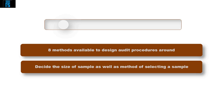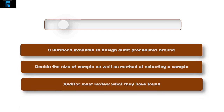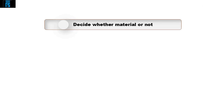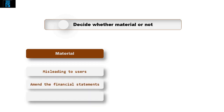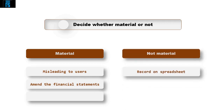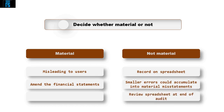Once the evidence has been gathered and audit procedures performed, the auditor must review what they have found. If misstatements have been found, they must decide whether these are material. If material, they could be misleading to users of the accounts, and the auditors ask the client to amend the financial statements. If not material, they must be recorded on a spreadsheet, often called the Summary of Unadjusted Errors — all smaller errors collected could accumulate into a material misstatement, so the spreadsheet can be reviewed at the end of the audit.